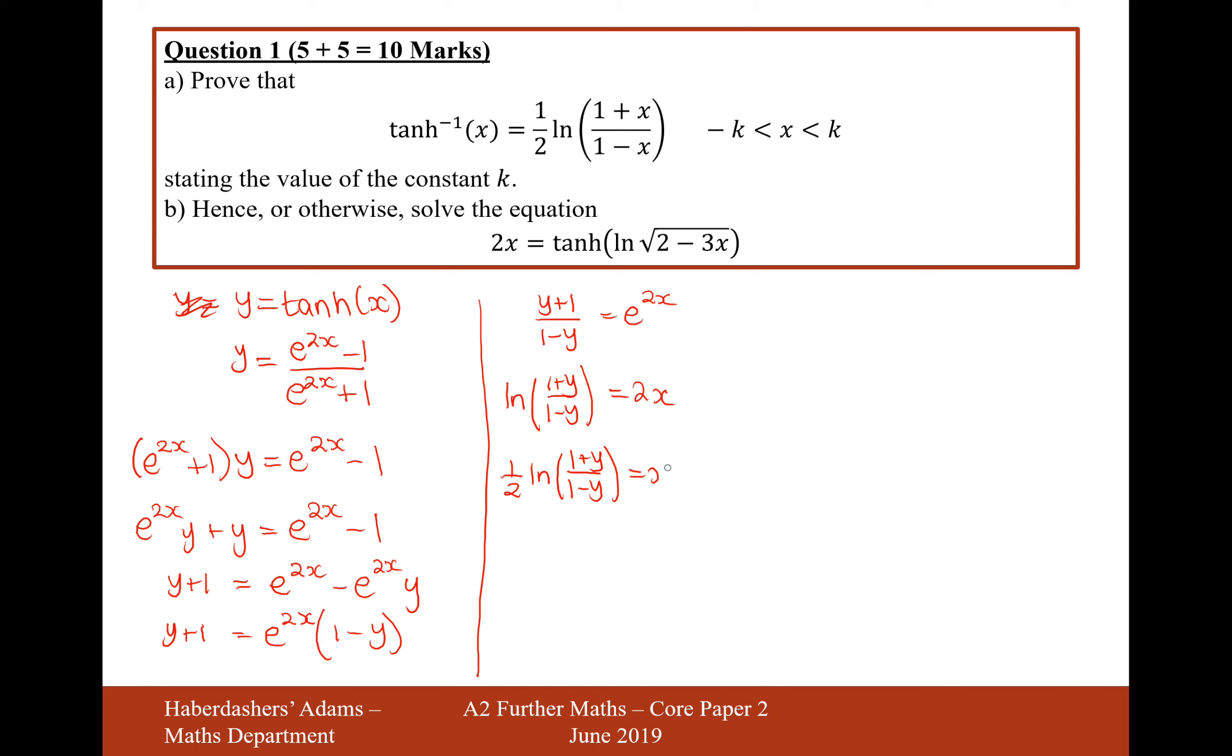That's the inverse function for tanh. So therefore we can say that tanh inverse is equal to half ln 1 plus x over 1 minus x. And the value of the range of x is going to be k is going to be 1 from minus 1 to 1 because that is the range of values for which this bracket here will be positive for. Otherwise, if it's outside of this range of values, then it's going to be negative. So k equals 1.